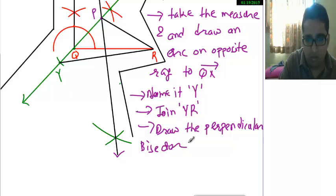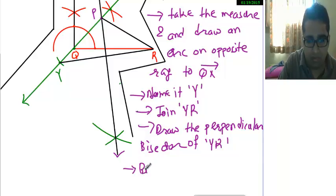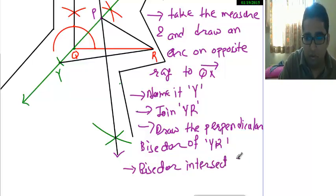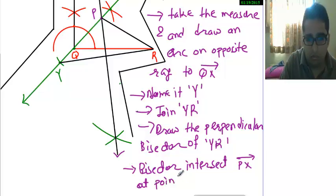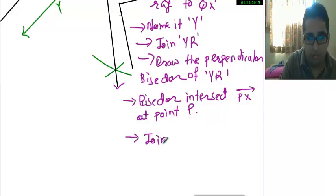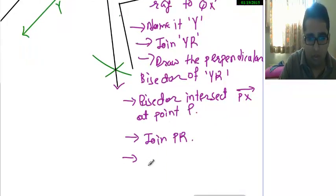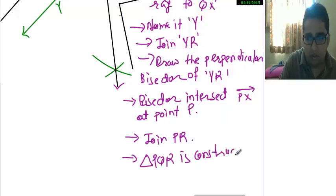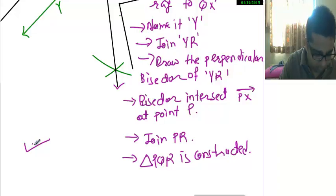Step 5: Draw the perpendicular bisector of YR. Let the bisector intersect ray QX at point P. Step 6: Join PR. Triangle PQR is constructed. Thanks for watching this video — see you in the next video.